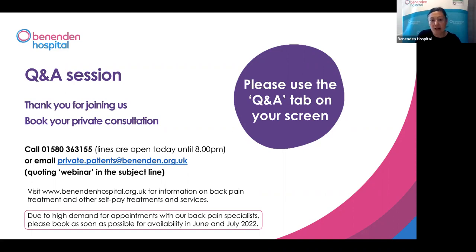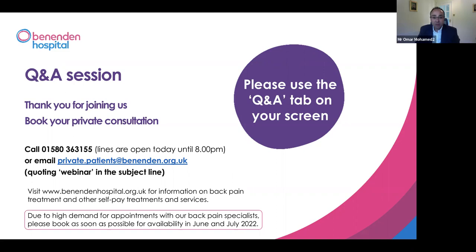Next question from Jean: I have had compression fractures in T5 and T6 due to osteoporosis and get a lot of pain in that area. Would an injection help me? I would suggest that the first line of treatment is to deal with the underlying problem, which is treatment for the osteoporosis. You should first get a DEXA scan — a specialised scan that tells us how bad the osteoporosis is — and subsequently be put on the appropriate medication.